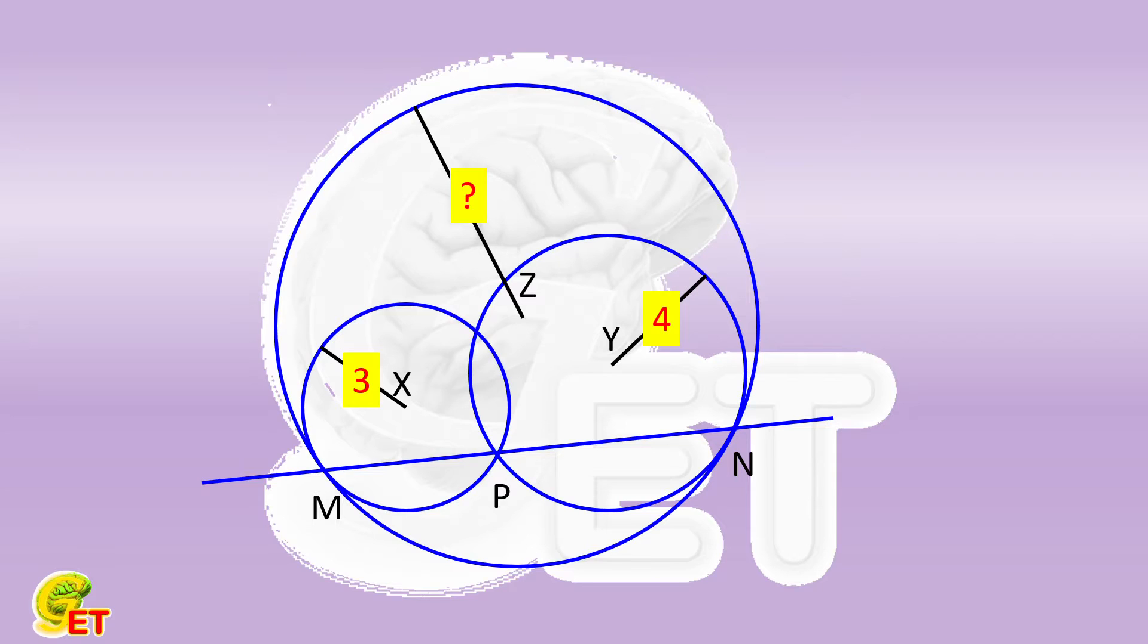Whenever we meet a question where two circles are tangent to each other, the first thing to think about is to connect the centers of the two circles and extend it, as the line must go through the tangent point. That is, points Z, X, and M are on the same line, and points Z, Y, and N are on the same line.